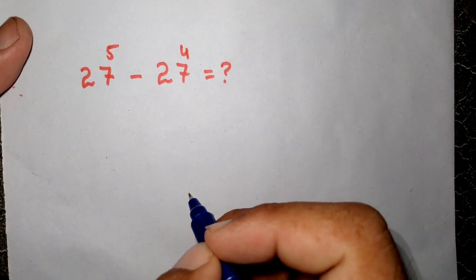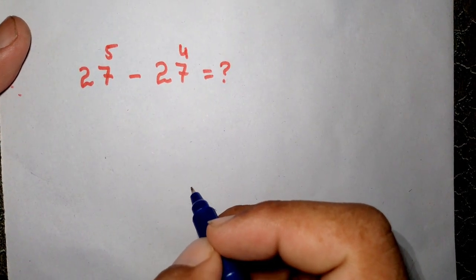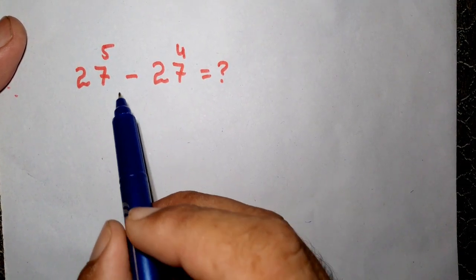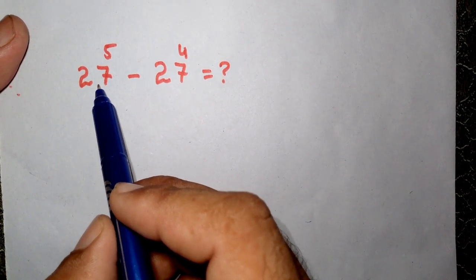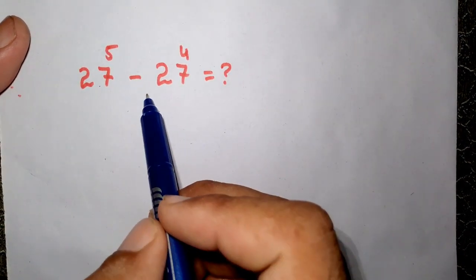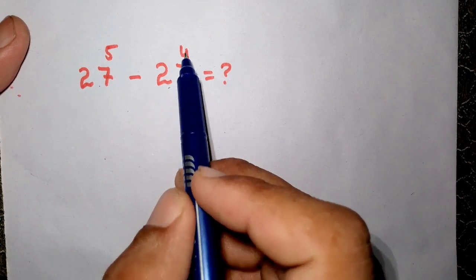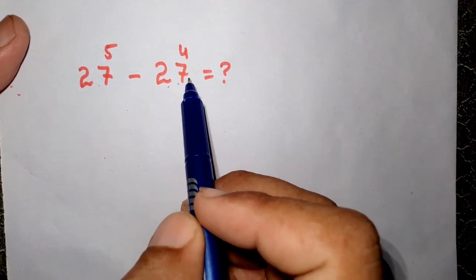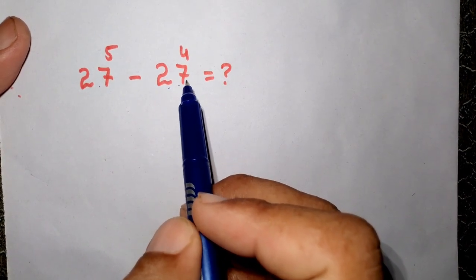Hello, welcome to the Maths Academy. We have to simplify 27 to the power of 5 minus 27 to the power of 4 without using a calculator.